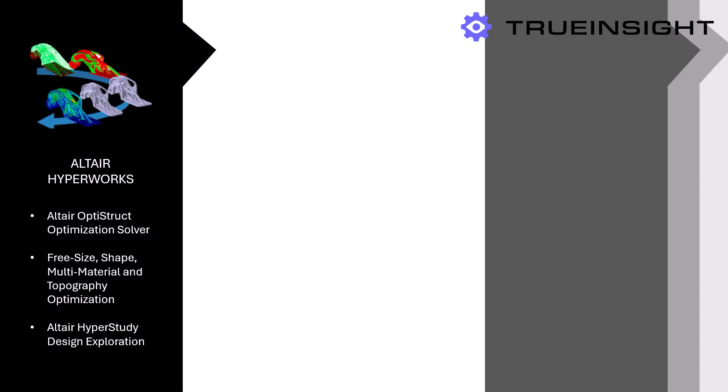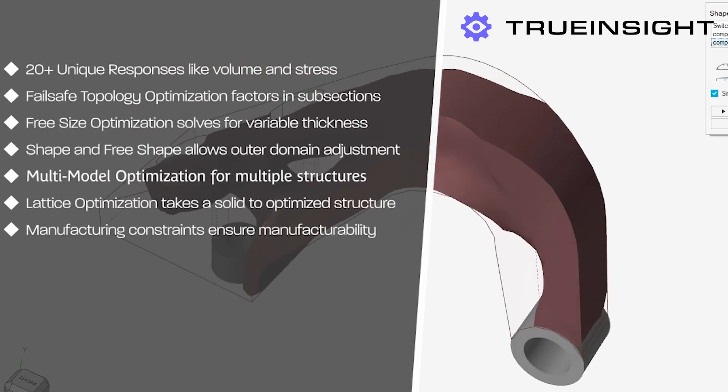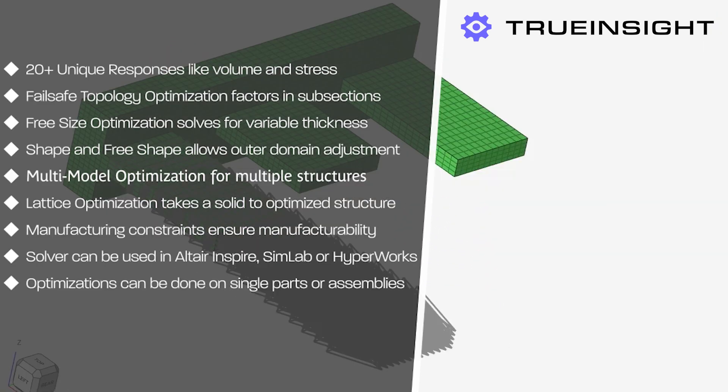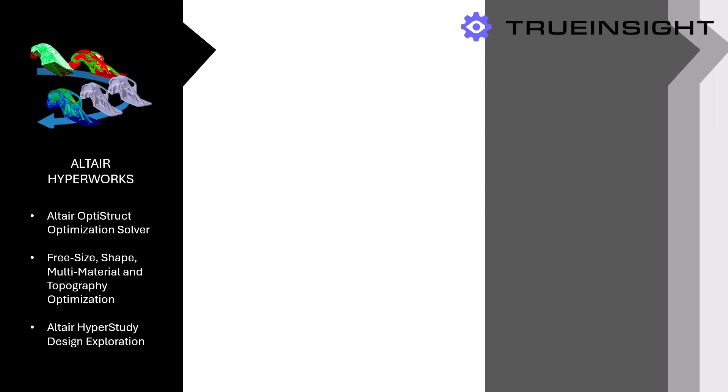With the Optistruct solver you can run free size, shape, multi-material, and topography optimization studies, and a lot more. HyperWorks also includes Altair HyperStudy, which is a powerful design exploration tool. It allows users to perform design of experiments to get simulation data on multiple design iterations very quickly.